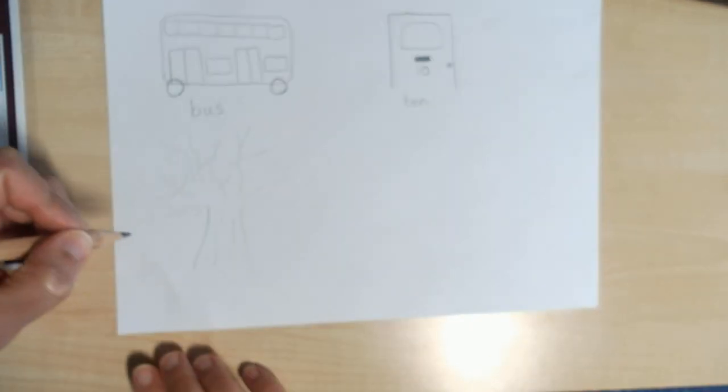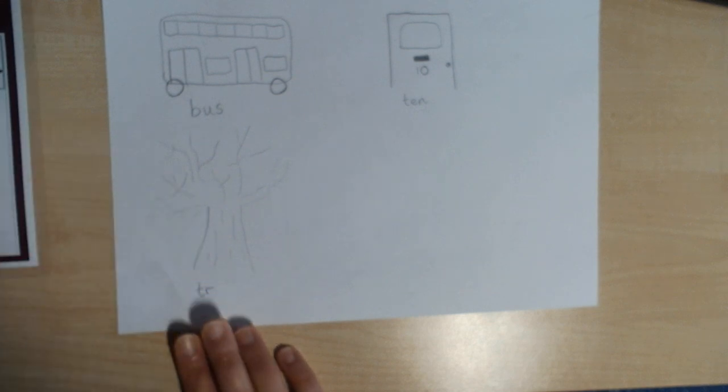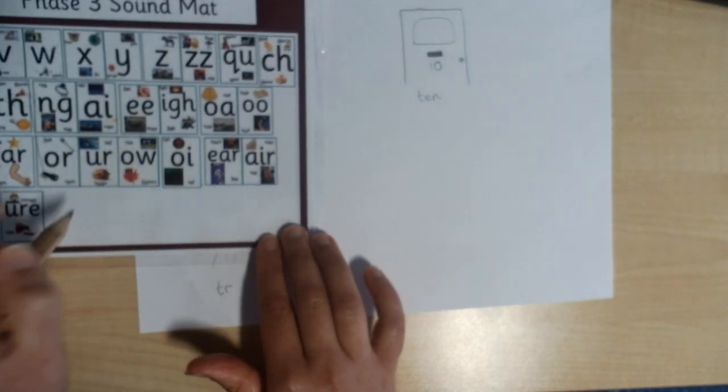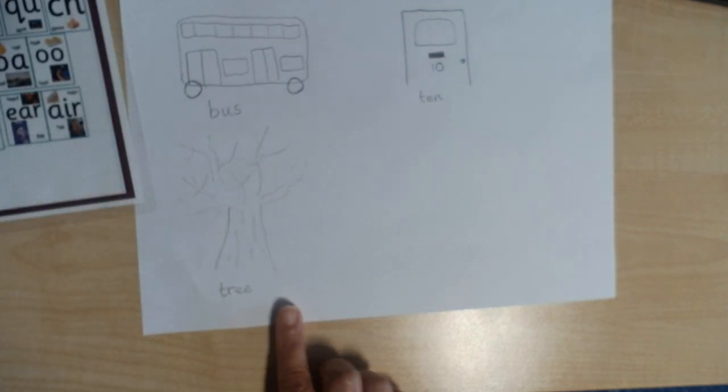T-r-ee, tree. T-r-ee. Let's have a look at that digraph: ee, tree.